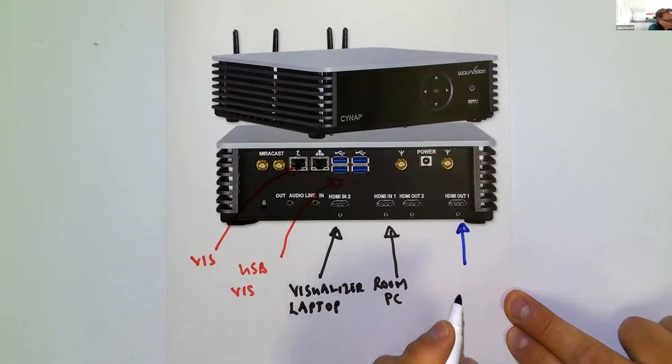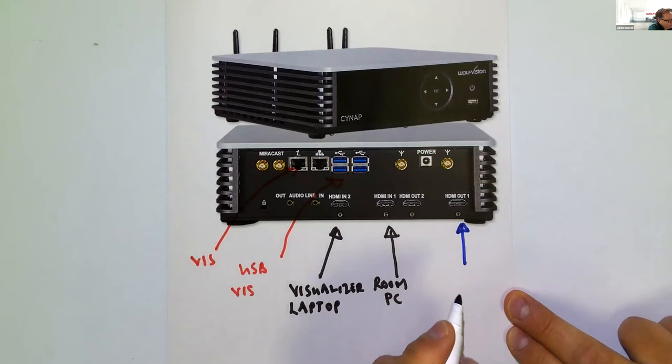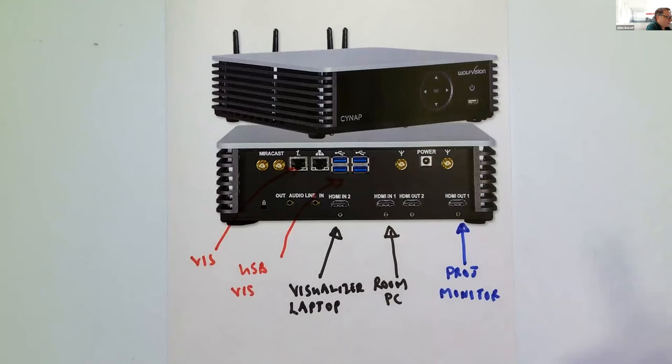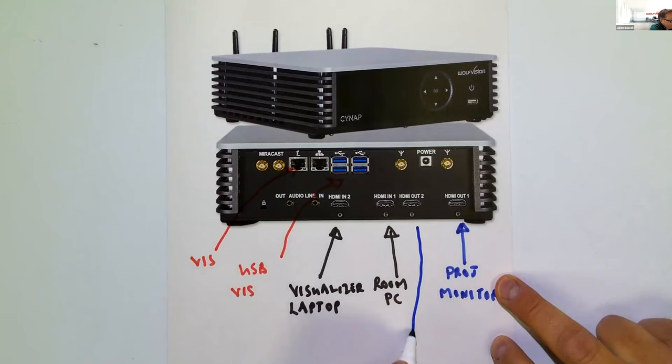In addition, there are two HDMI outputs. HDMI Output 1 would connect your projector or monitor. If you need two screens or projectors in the room, HDMI Output 2 can be used. But an interesting alternative for HDMI Output 2 is to connect a small touch monitor.